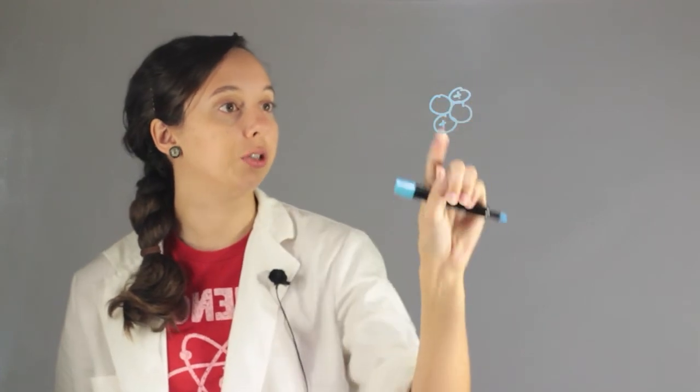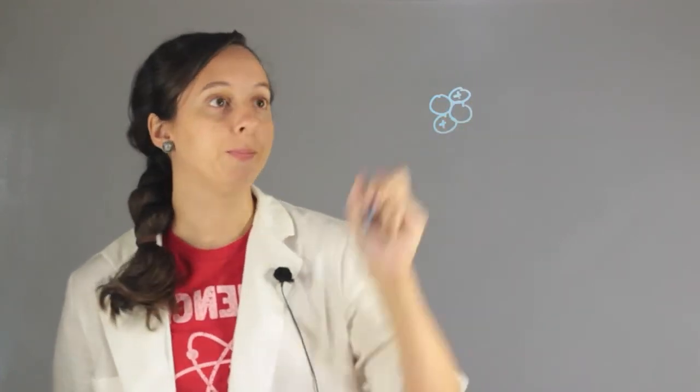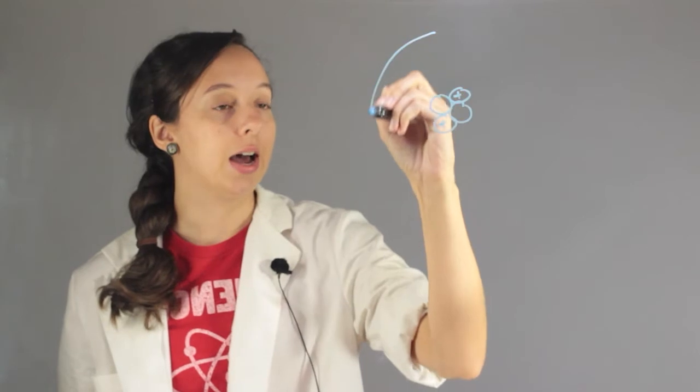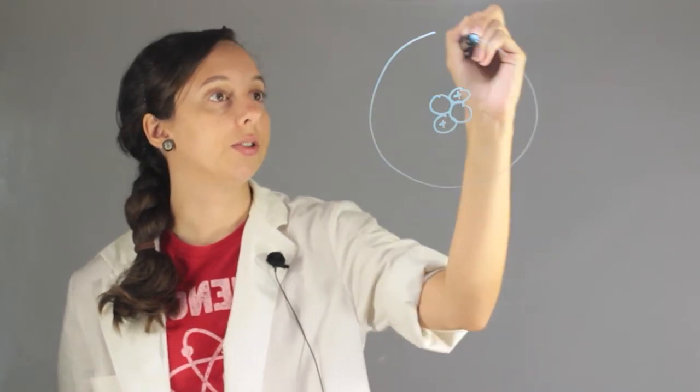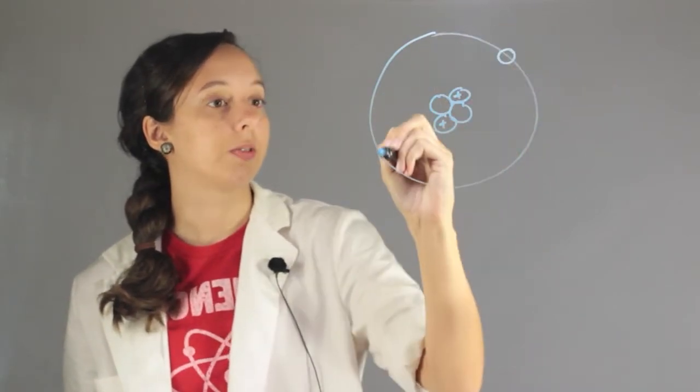So that means that it has two protons, both positively charged, and two neutrons. It's going to be neutral here, and it also has two electrons circling the nucleus with a negative charge.